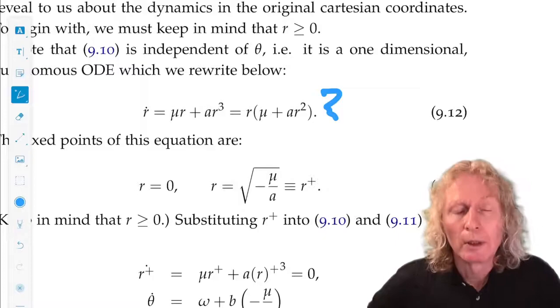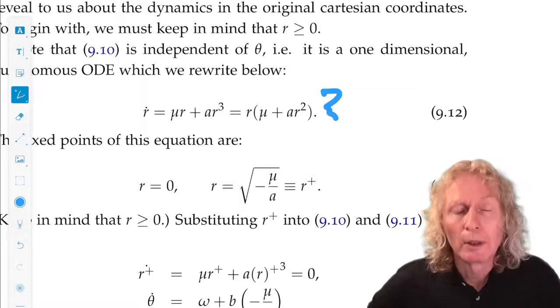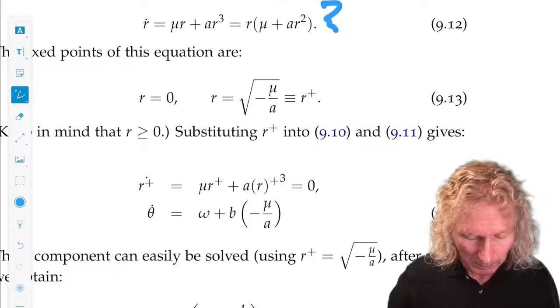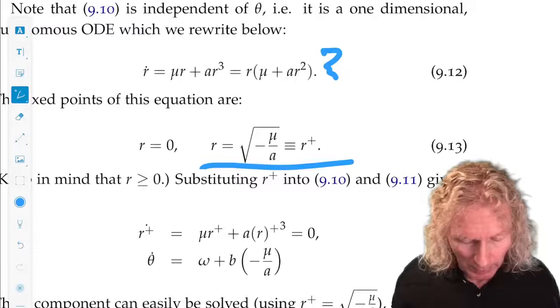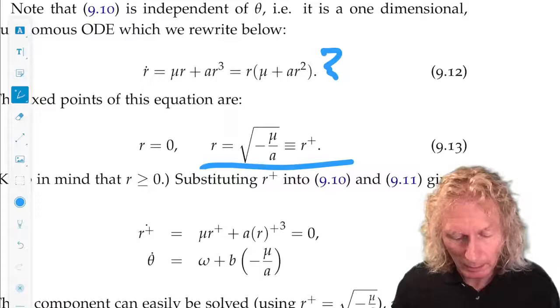We looked for equilibria, and then I made the comment that I mentioned already that r had to be greater than or equal to zero. So we want to look at the behavior of 9-12.